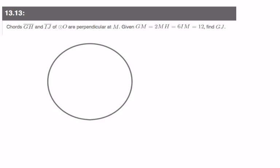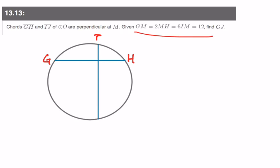Let's look at number 13. Chords GH and IJ of circle O are perpendicular at M. They gave us some relationships, so let's draw the picture. GM equals 12 and MH must be half of GM, so MH equals 6. Also, 6 times IM equals 12, so IM must equal 2.